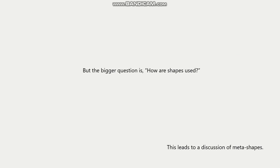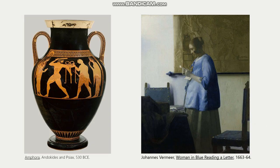Besides how shapes are created, an even bigger question is how shapes are used. I'm going to focus on two main topics. One is shape grouping or meta shapes — the way shapes group together to make larger shapes and how that's organized in paintings to help viewers navigate a composition. The other is how explicit the artwork is about shapes — how upfront the artist is about the fact that they're working with shape.